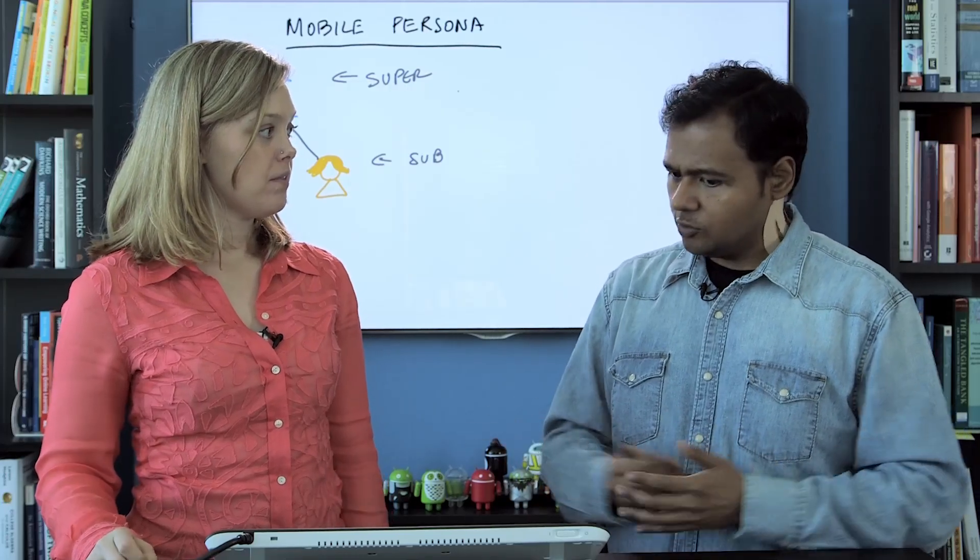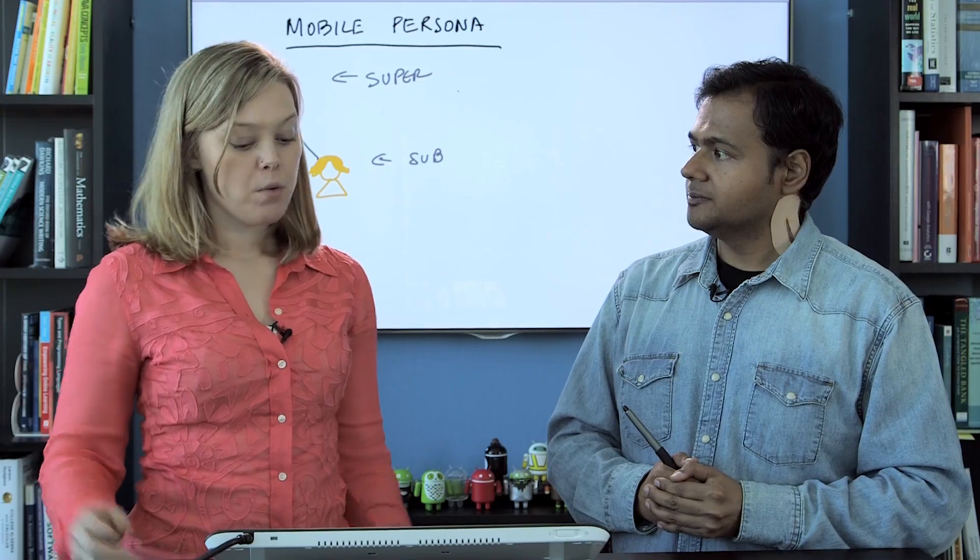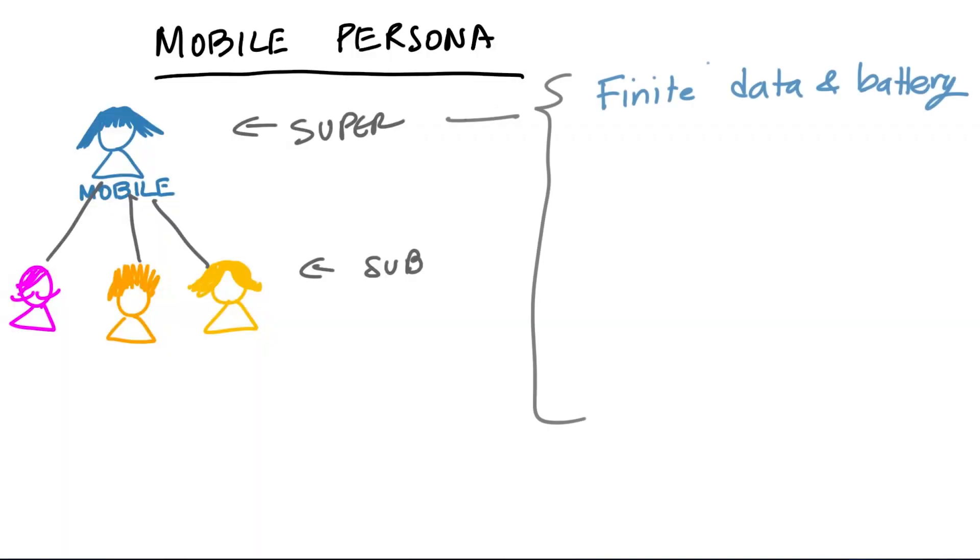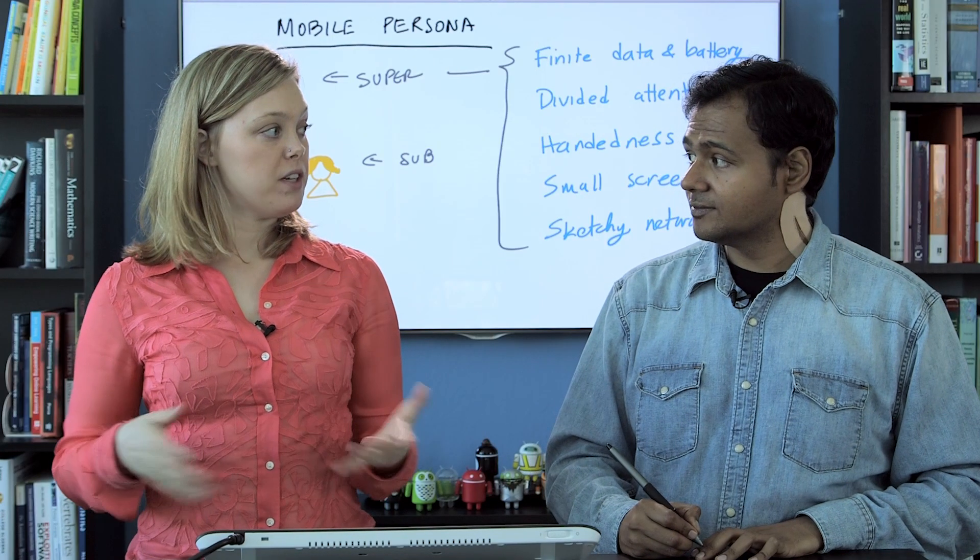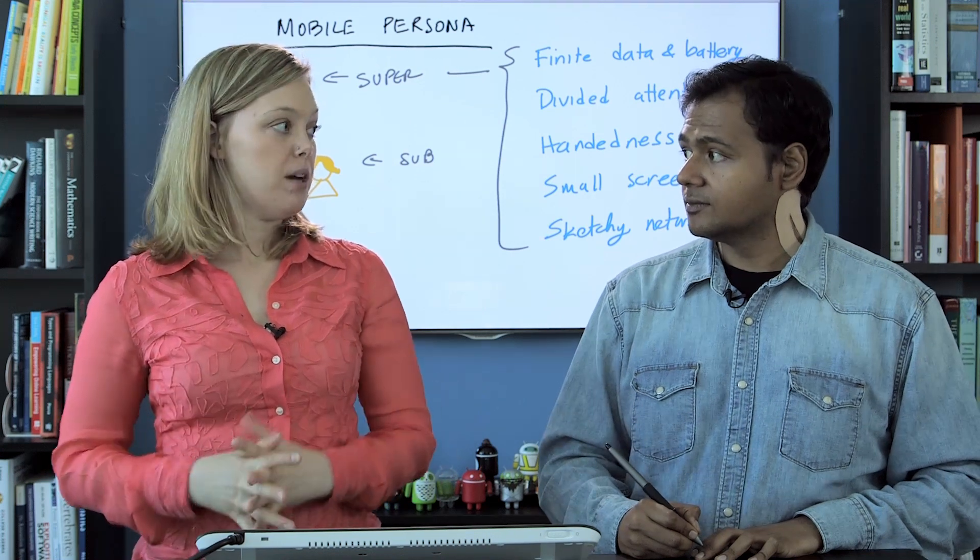So Isabel, what are the attributes of this mobile user persona? Well, the first attribute would be that they have a finite data plan and finite amount of battery. They also have divided attention. Yeah, exactly. When I'm using my phone, I'm always doing five or six things at the same time. There's also something called handedness, which has to do with how a user holds the phone in their hands. And then of course, the mobile user has a very small screen. And also, because the user's moving around, they usually have very sketchy network access.